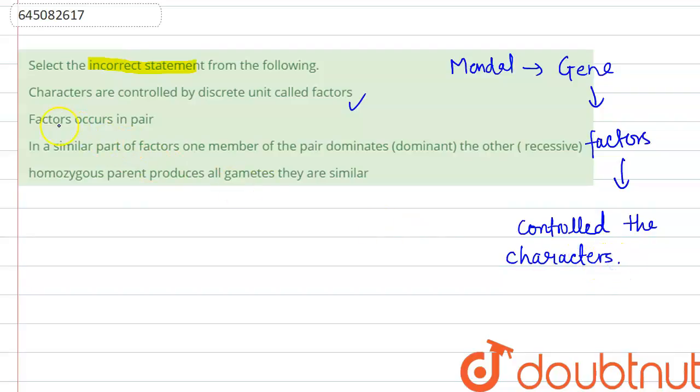Option B: Factors occur in a pair. It is also a correct statement because the factors or a gene generally occur in pairs, like TT, Tt, or tt.